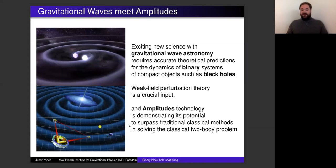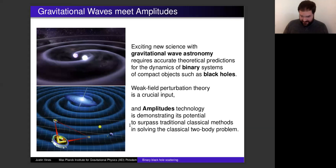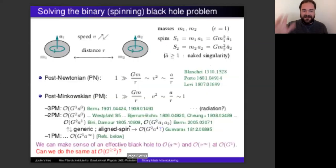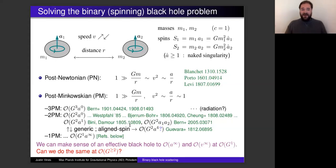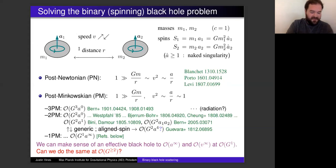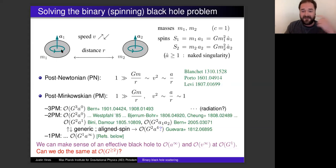Doing perturbation theory in classical physics is still difficult, and it turns out we have seen recently that amplitudes technology originating from quantum field theory is demonstrating its potential to surpass traditional classical methods in solving the two-body problem. With that in mind, I'm not actually going to say much else about gravitational waves, but about solving the binary spinning black hole problem.